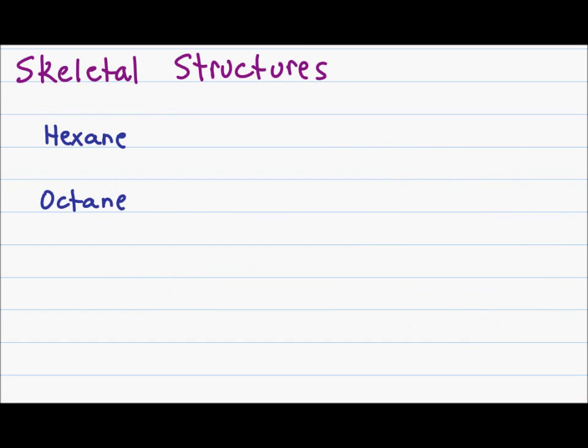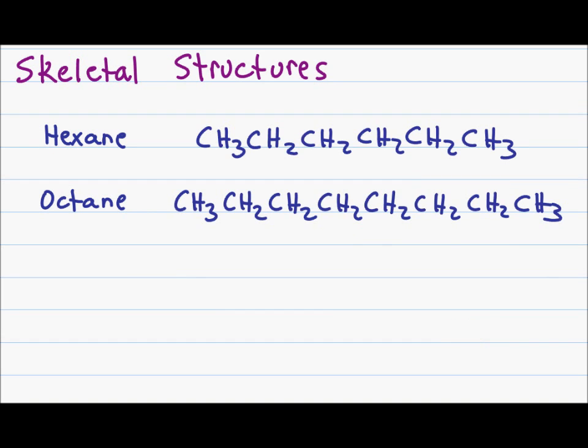But what if you're trying to show a molecule like hexane or octane? Hexane is a chain of six carbons and octane a chain of eight. Don't worry about the names because we'll cover that in a future video but for now just look at the sheer size of these molecules. Imagine you had to show a reaction in where you have to draw these molecules over and over.